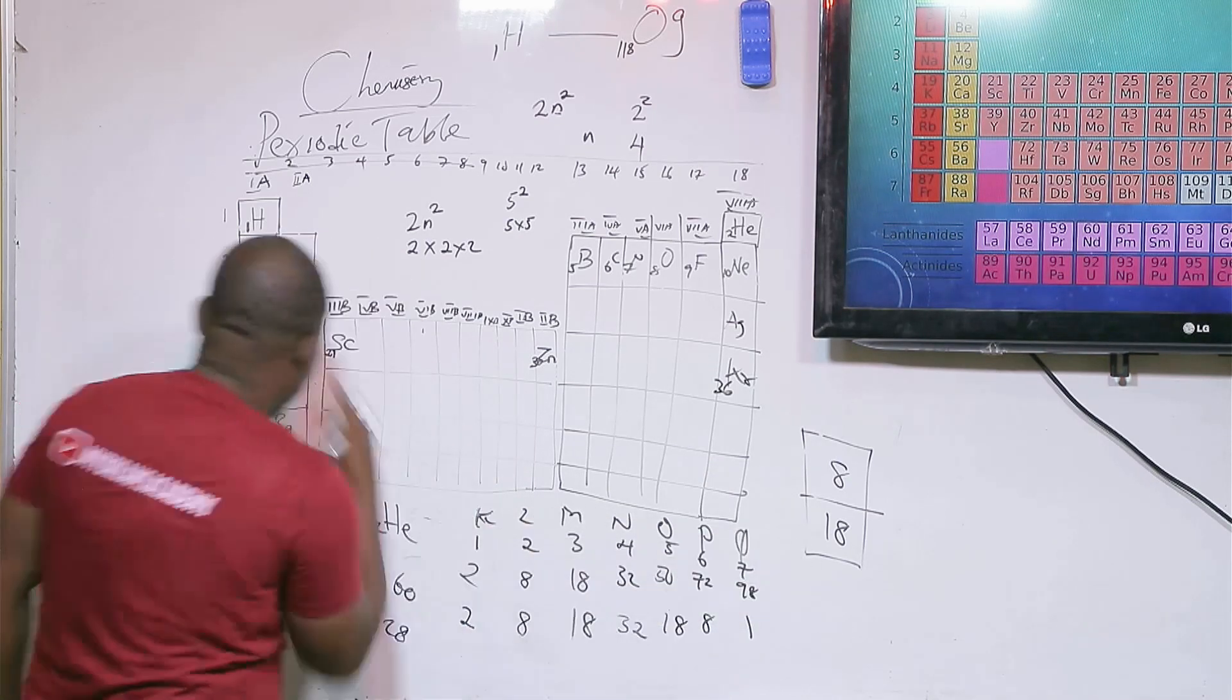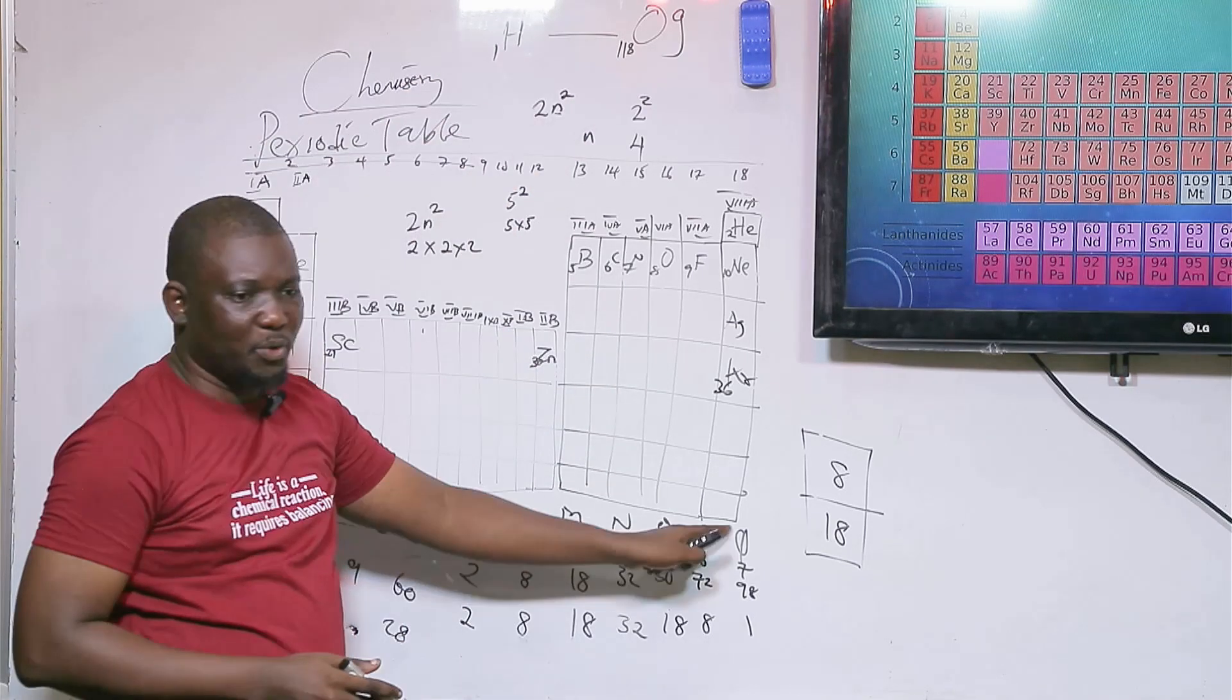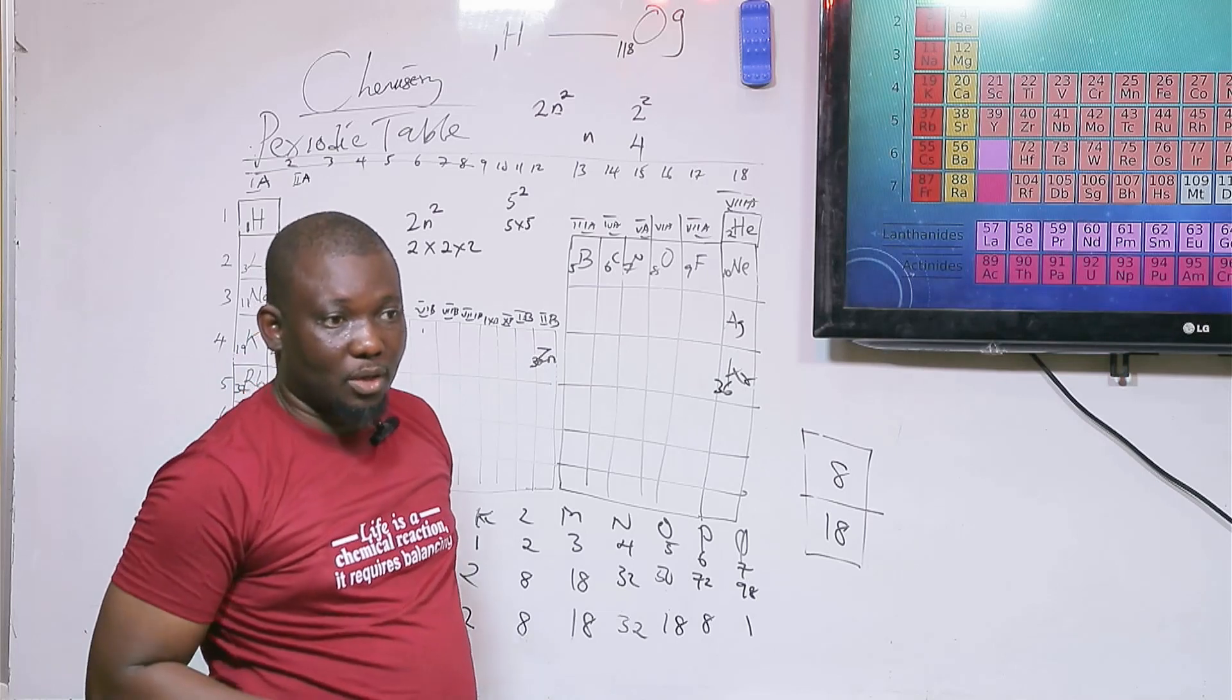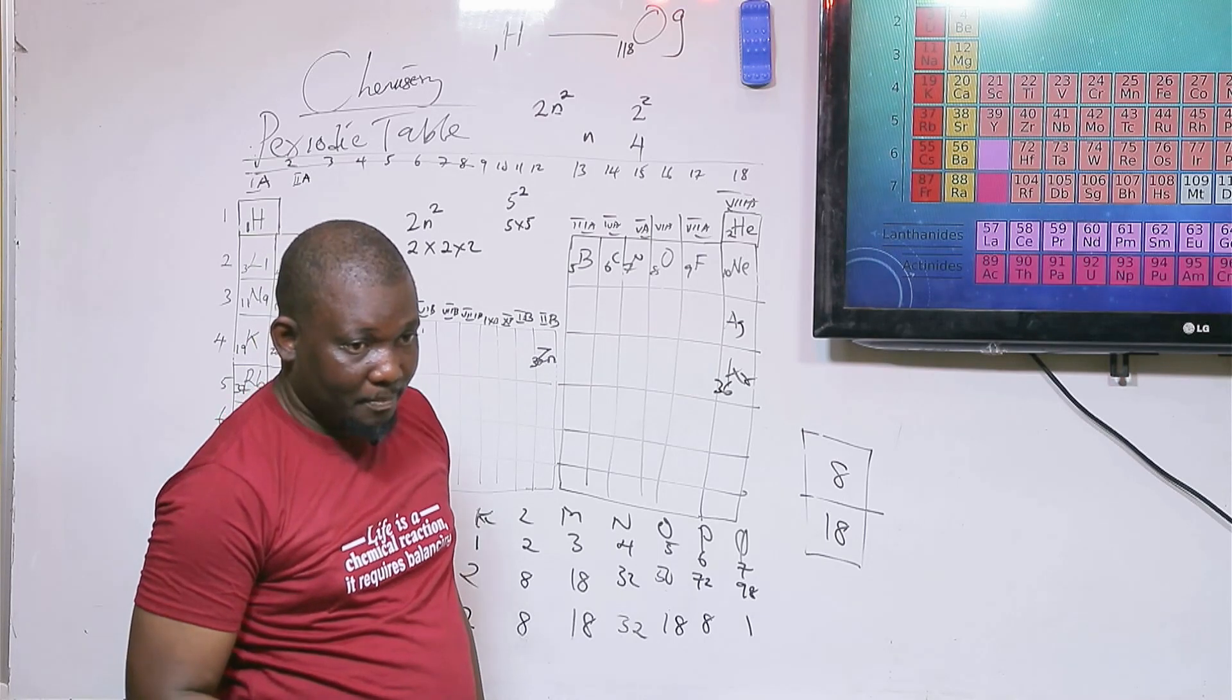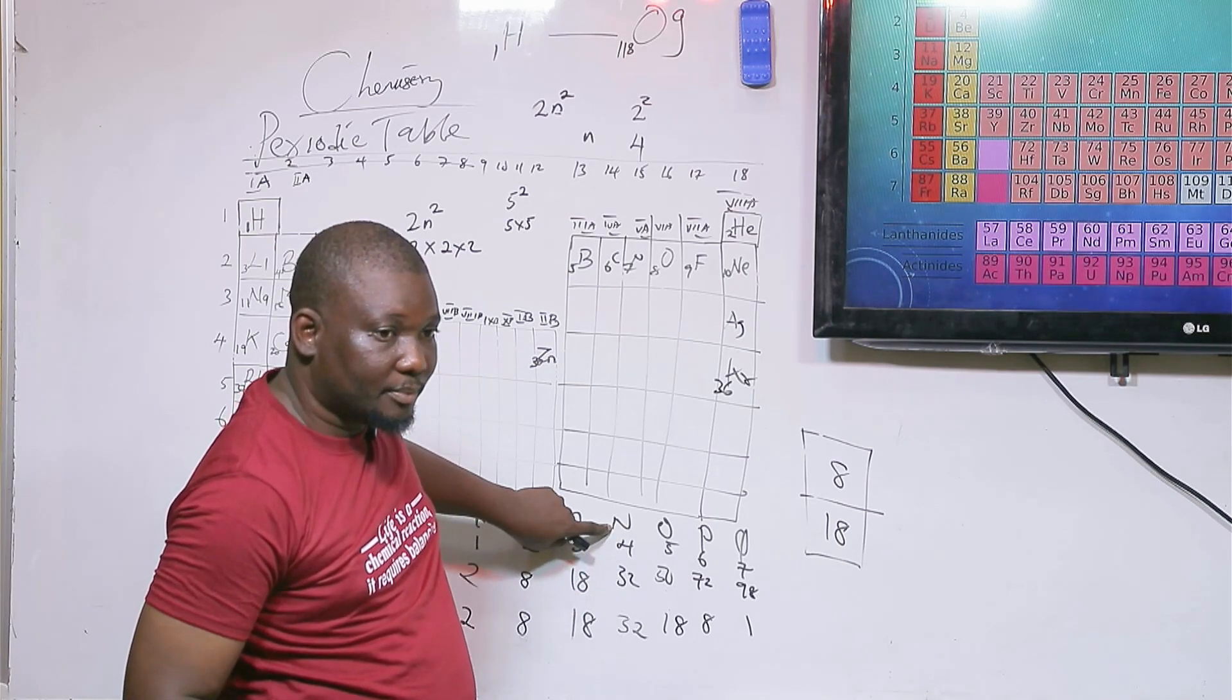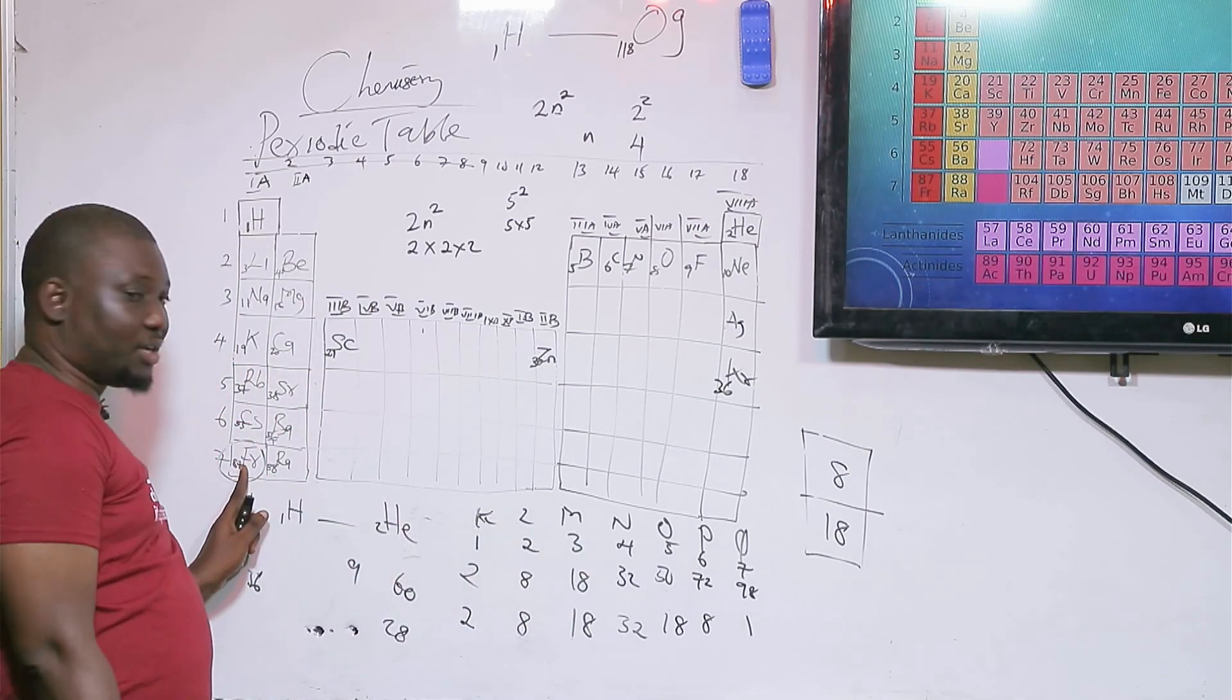How many shells are here? 7. So that's why it's in period 7, and group 1 because of one valence electron. You can do this for all elements, even OG. You won't exceed these shells. Any element that exceeds this number of shells means that element does not exist. It means that the element is quantum mechanically forbidden.